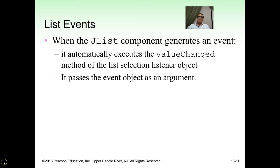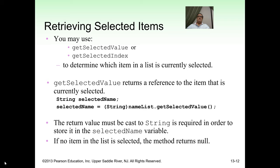To retrieve selected items, you may use getSelectedValue or getSelectedIndex to determine which item is currently selected. getSelectedValue returns a reference to the currently selected item. For example: String selectedName = (String) nameList.getSelectedValue(). The return value must be cast to a String. If no item is selected, the method returns null.